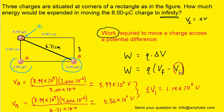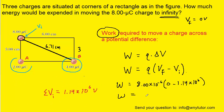Now that we have the initial electric potential and the final electric potential of zero volts, as well as the charge Q — remember that's the 8 microcoulombs — we can plug into the work formula. Notice again that we converted the 8 microcoulombs to coulombs by multiplying by 10 to the minus sixth. When we calculate this work we get approximately negative 9.08 joules. So that is indeed the correct answer.